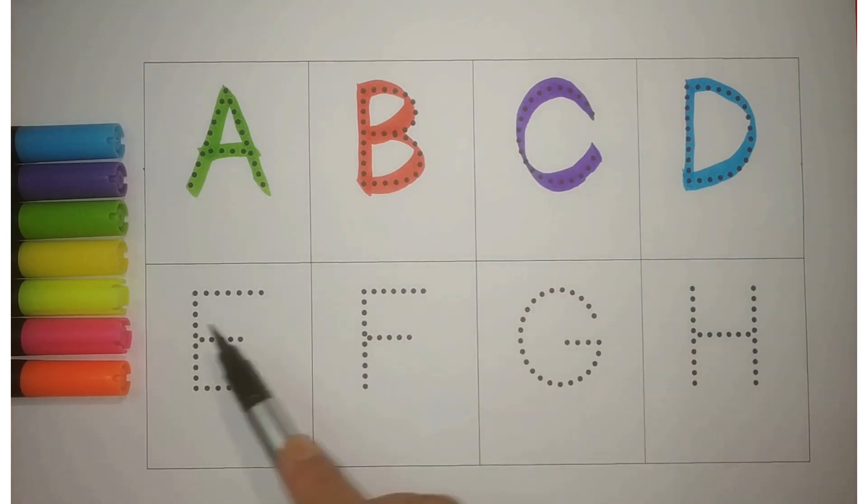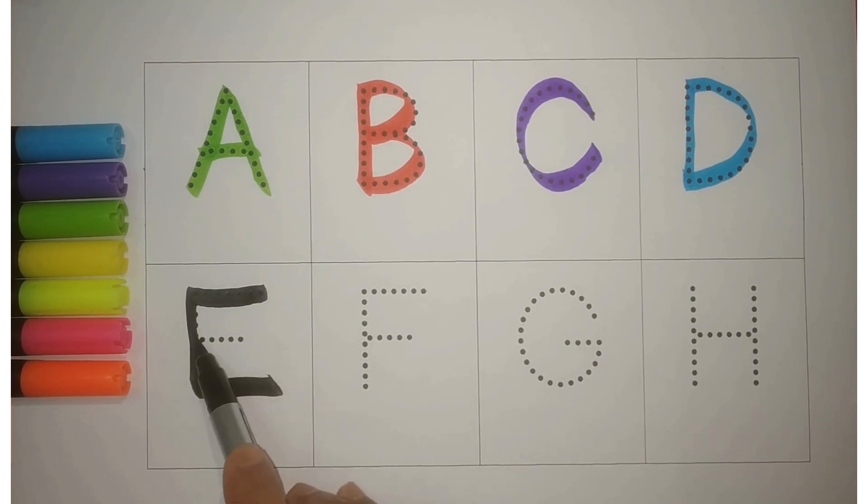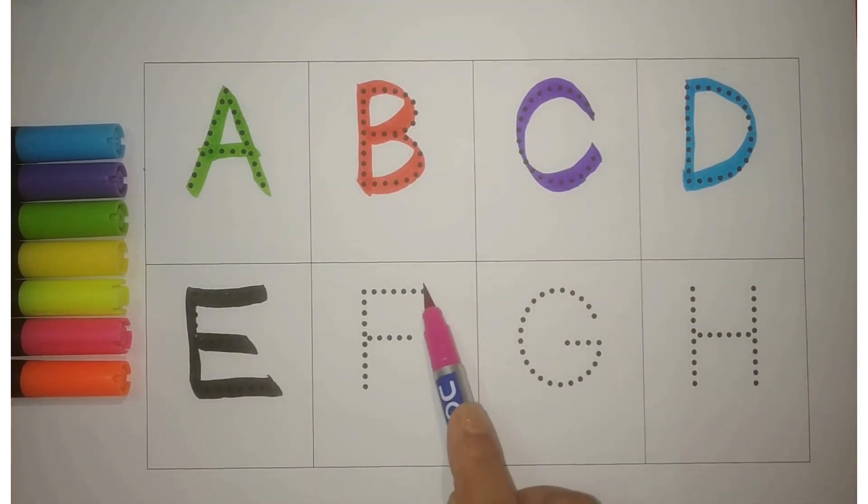Black E. E for elephant, haati. Pink F. F for fish, machli.